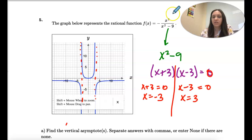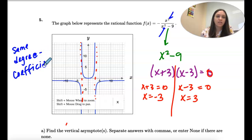We have the degrees 2 over 2. So when it's the same degree, we look at the coefficient, and that's the number in front of x.